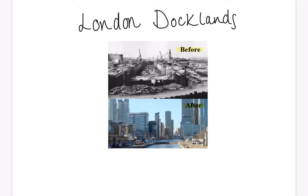Hello everyone. This video will talk you through London Docklands, which is an example of an urban regeneration project. With this example we'll consider why the regeneration was needed at London Docklands as well as the main features of the project. You would use this example in the urban issues section of paper 2 and it's one that you should know really well.